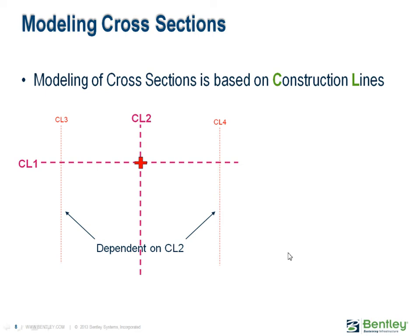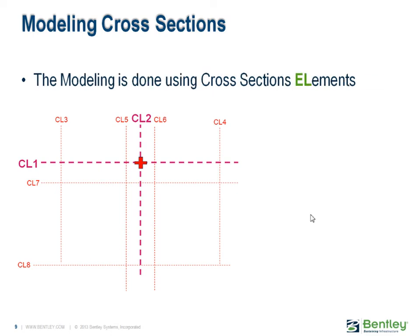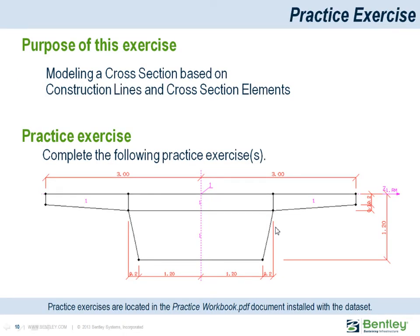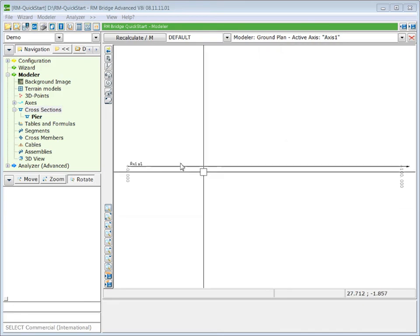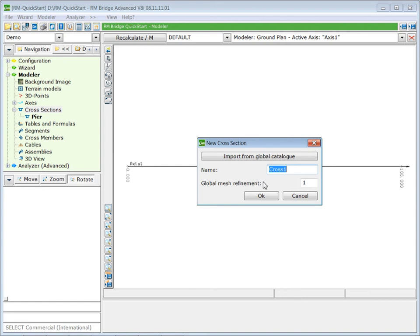In a first step, you have to prepare all the construction lines which are necessary for the cross-section elements. The cross-section itself is then composed of cross-section elements, which are input based on the intersection of construction lines. In this exercise, we will model a simple cross-section. The total width is 6 meters, the width of the bottom face is 2.4 meters, the total height is 1.2 meters, and the thickness of the cantilever plate varies between 20 and 30 cm. In the modular navigation tree, click with the right mouse on Cross-Section and select New Cross-Section. Give a reasonable name and press OK.